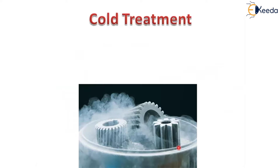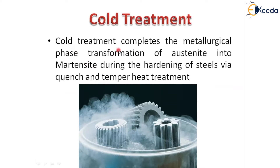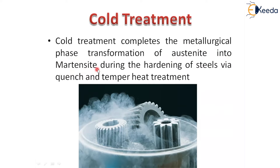The second category is cold treatment. This is the main category in sub-zero heat treatment process. Cold treatment completes the metallurgical phase transformation, concentrating especially on phase transformation of austenite into martensite. For steel, if you want to undergo heat treatment, you must heat the material until it reaches austenite. After it reaches austenite, if you want to get a hard structure, you have to cool rapidly — producing the martensitic structure.